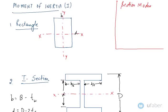If I take the first two fractions of the bending equation, that is sigma upon Y is equal to M upon I — not taking into account E upon R — then if I have to find out the bending moment, it can be written as sigma into I upon Y.